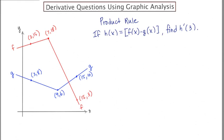In this problem we're going to do a derivative question involving the product rule and analyzing the graph to get the answer. Suppose that h of x is equal to the product of f of x times g of x, and we're asked to find h prime of three. Since h is defined as a product, we're going to need to use the product rule.